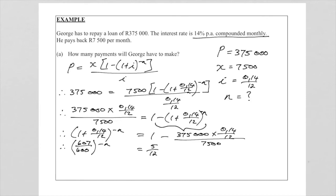And now we are ready to use logs. So we're going to say that minus n is equal to the log of 5 over 12 with my base 607 over 600. Now when you calculate this log on your calculator you will get a negative answer of 75.477065, and then of course to find n we will just multiply with a negative so n will be 75.477065.